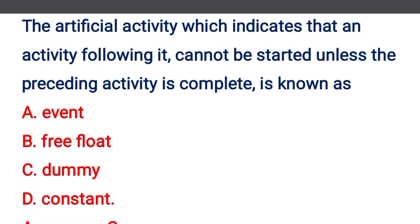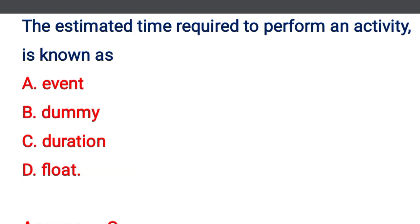Next question: the artificial activity which indicates that an activity following it cannot be started unless the preceding activity is complete is known as — option A: event, option B: free float, option C: dummy, option D: constant. The correct answer is option C: dummy. Next question: the estimated time required to perform an activity is known as — option A: event, option B: dummy, option C: duration, option D: float. The correct answer is option C: duration.